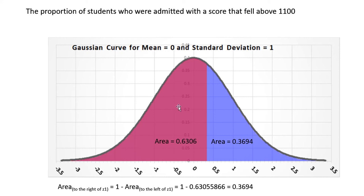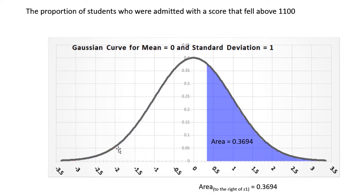Now, let's see what happens when I physically subtract this magenta. And there you have it, we are left only with 0.3694 as the area to the right of the z-value of 0.333, which in this case corresponds to an SAT score of 1100.